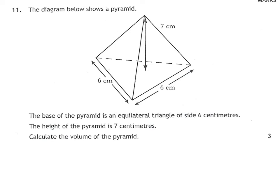Question 11, we have a pyramid. It tells us the base is an equilateral triangle of side 6 and the height is 7. We have to find the volume of a pyramid. Volume of a pyramid is V equals one-third AH. So we need to get the area of the triangle and we know the height. We know it is one-third times something times 7.